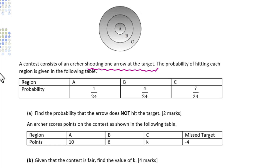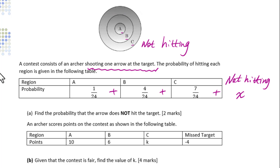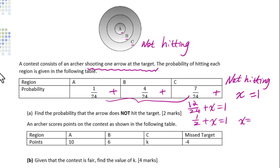Shooting one arrow at the target means four different situations: A, B, C, or not hitting the target. The probability of not hitting the target is x. The sum of the probabilities of the four situations equals 1. This gives 12 over 24 plus x equals 1, so x equals one half.